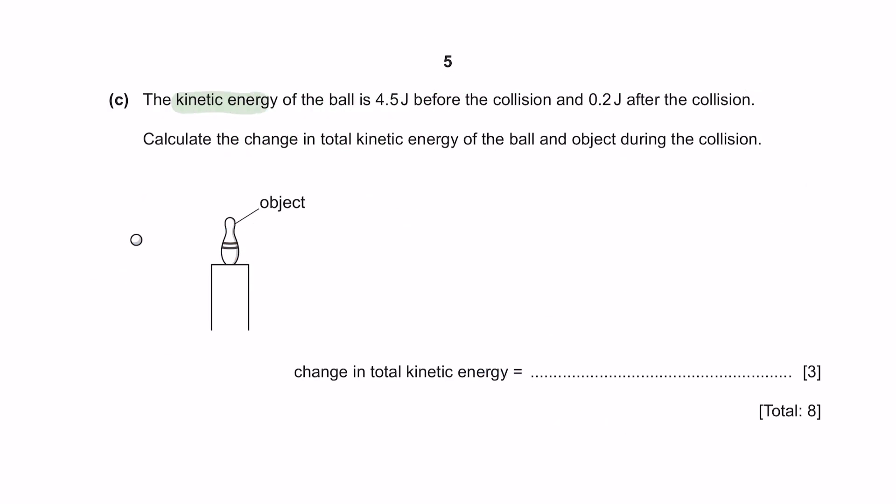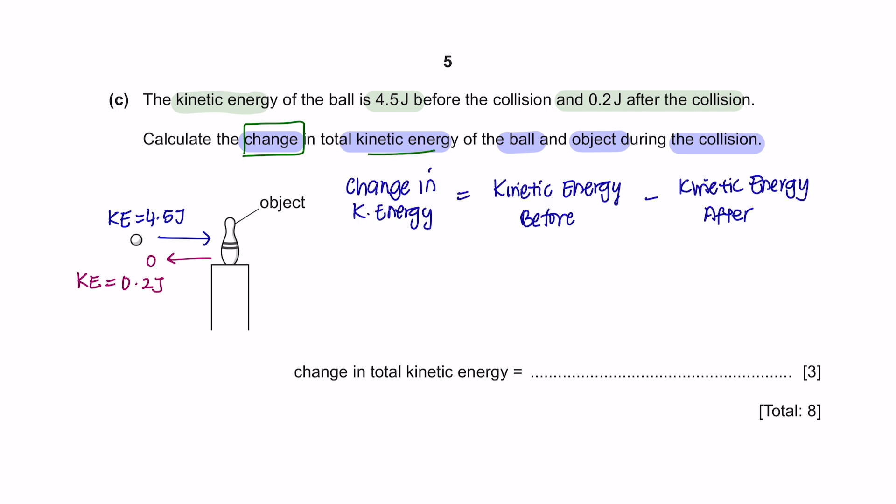Question C. The kinetic energy of the ball is 4.5 joules before the collision and 0.2 joules after the collision. Calculate the change in total kinetic energy of the ball and object during the collision. To find the change in the kinetic energy, we can first look for the kinetic energy before and minus it with the kinetic energy after. We are already given the kinetic energy before which is 4.5 joules, and we also have the kinetic energy after for the ball which is 0.2 joules. But we do not know the kinetic energy for the object after the collision, so we have to look for that using the formula of kinetic energy, which is 1 over 2 times mass times velocity squared. The mass of the object is 1.8 and its velocity is 0.89 squared. So the kinetic energy of the object after collision is 0.71 joules, and the answer in two significant figures is 3.6 joules.